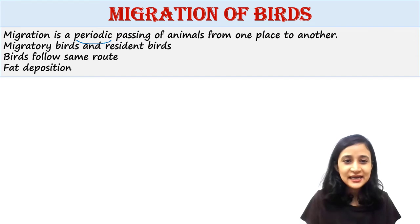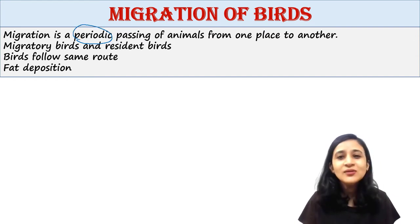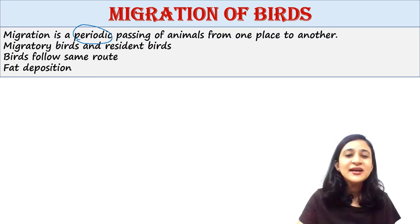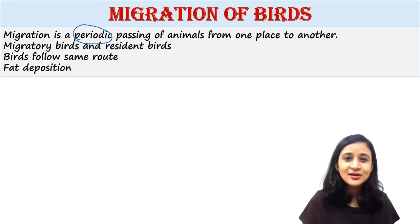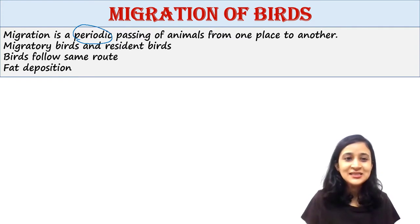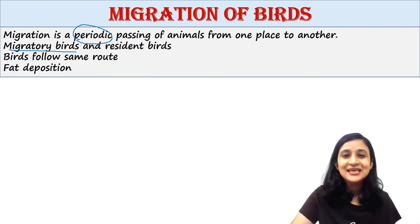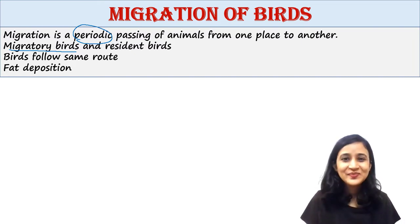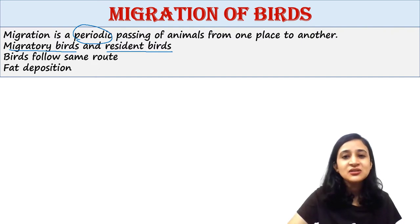It is periodic because not throughout the year, but birds migrate during a particular time of the year. The majority of birds have the inherent quality to move from one place to another to obtain the advantages of favorable conditions. Such birds are called migratory birds. This is an inherent quality because they genetically acquire it. Some birds do not migrate and remain throughout the year in the same country — such birds are called resident birds.